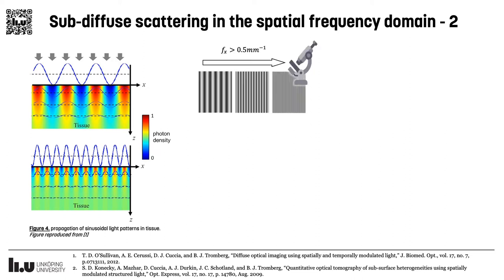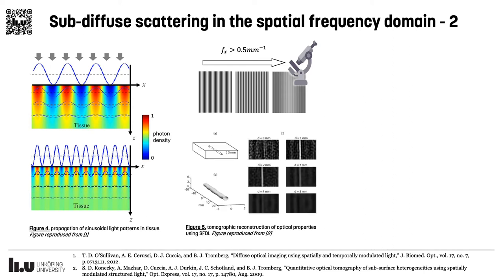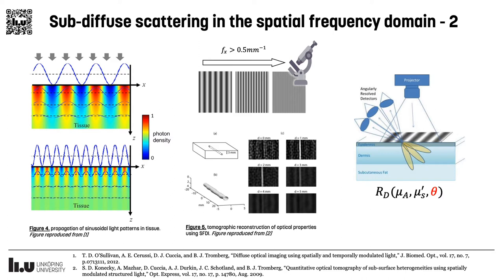A first approach we have adopted is to use several spatial frequency ranges in order to probe the tissue at different depths, and then attempt to use depth reconstruction techniques to obtain 3D maps of optical properties, as was already shown in previous works. A second approach is to perform measurements at different angles, to study the angular influence on diffuse reflectance, and if it is possible to use this method to obtain information about the tissue layers and the orientation of the scattering particles.